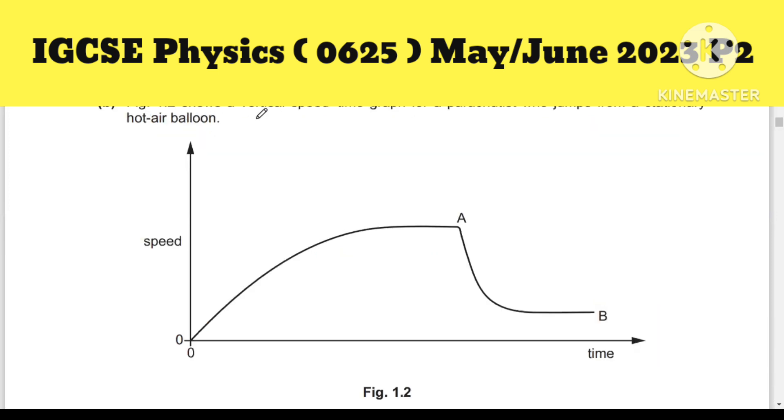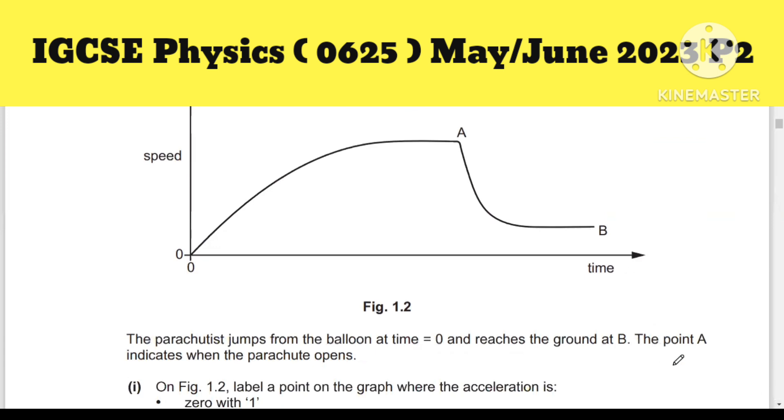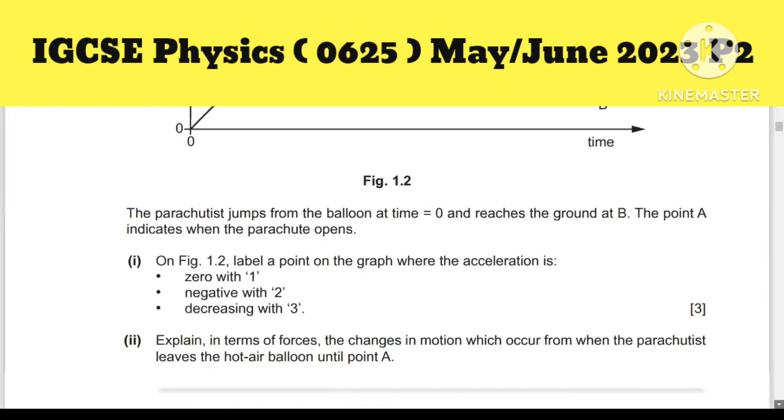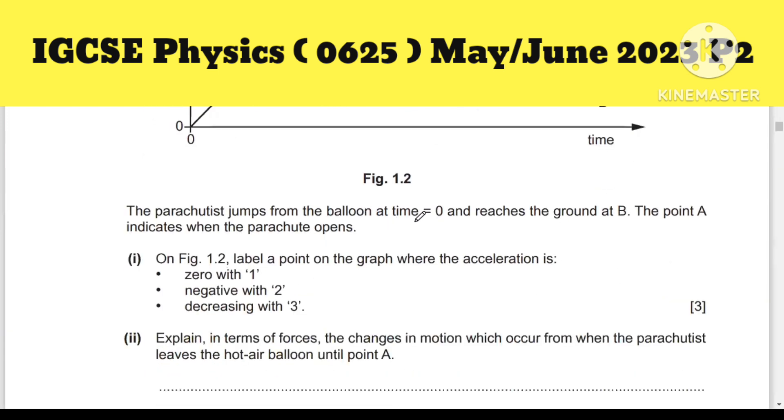Figure 1.2 shows a vertical speed-time graph for a parachutist who jumps from a stationary hot air balloon. This is a graph about speed and time, and gradient equals acceleration. The question is: the parachutist jumps from the balloon at t = 0 and reaches the ground at point B. Point A indicates when the parachute opens.